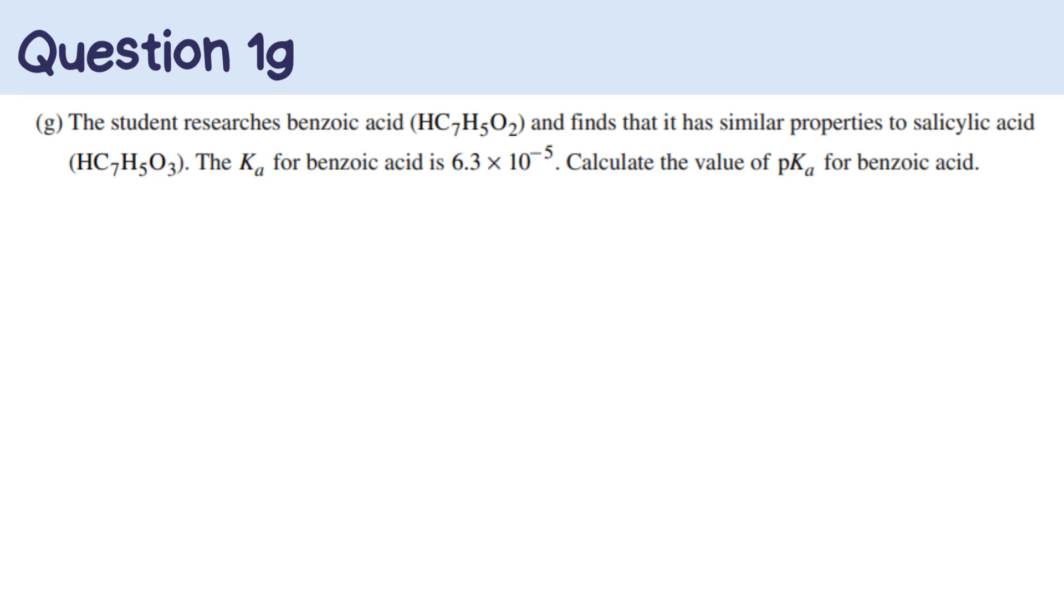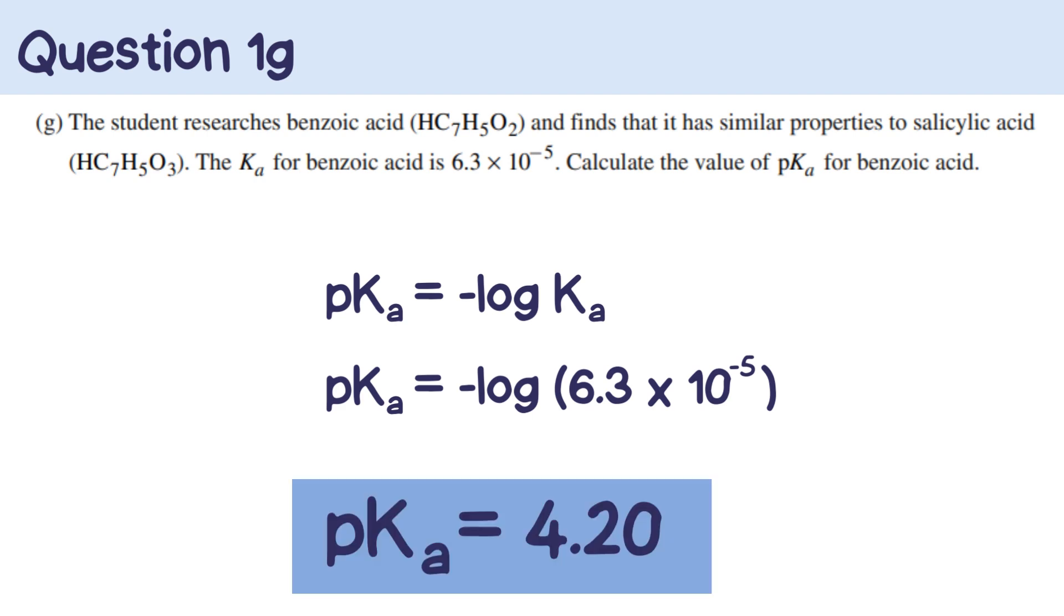And finally, we're on to our last question. We're given that benzoic acid is similar to salicylic acid, and we're also given the Ka value on that. Now we need to find the value of pKa for the benzoic acid. Again, this one is a super easy question just because it only revolves around an equation. By definition, pKa is equal to the negative log of Ka, and our Ka value for benzoic acid is 6.3 times 10 to the negative 5. And if you plug that into your calculator, you get a pKa value of 4.2. Not too bad of a question, and yeah. That pretty much wraps up all of the 2022 AP Chemistry FRQ number one.